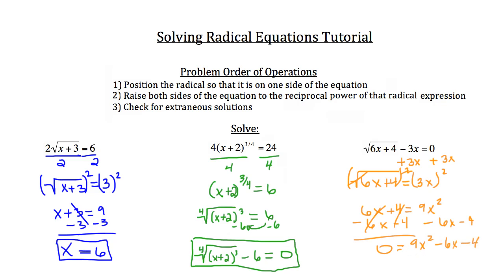Since it's set equal to 0, that suggests using the quadratic formula to solve. You'll get two values for x: x equals 1/3 times (1 minus the square root of 5), and x equals 1/3 times (1 plus the square root of 5). You could also use the completing the square method. Most radical equations you'll see are slightly easier than these last two, so don't be discouraged. All of them can be solved by sticking to the order of operations outlined here.